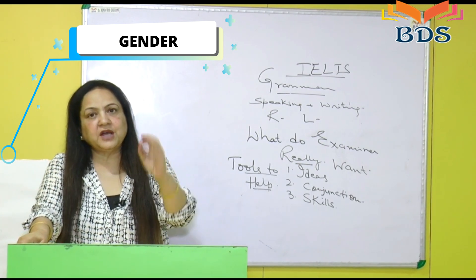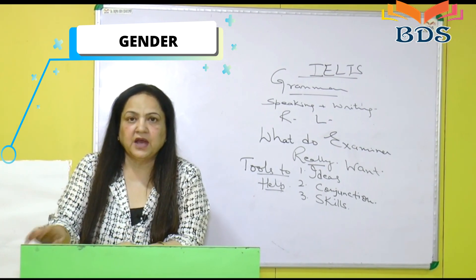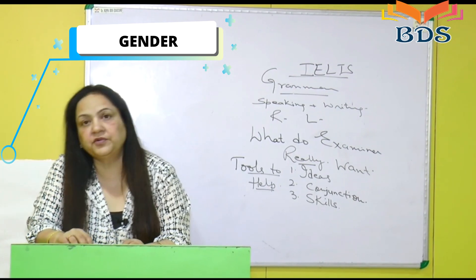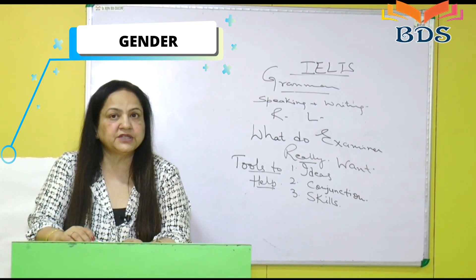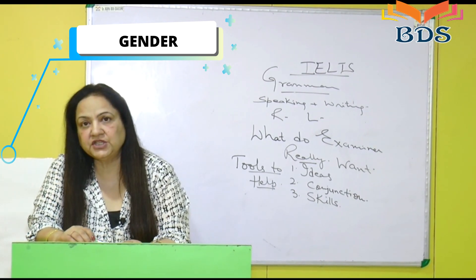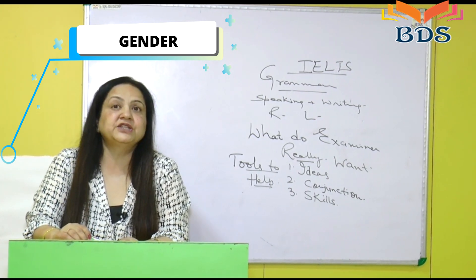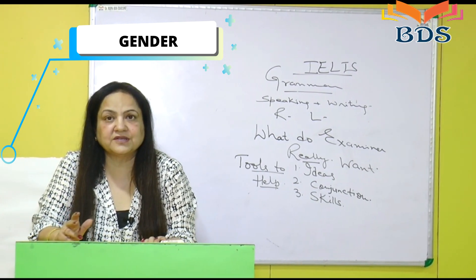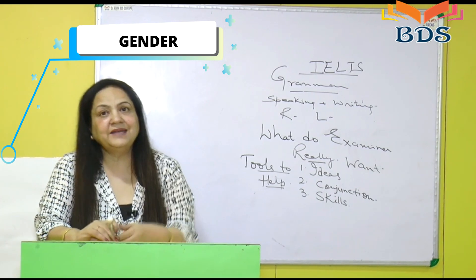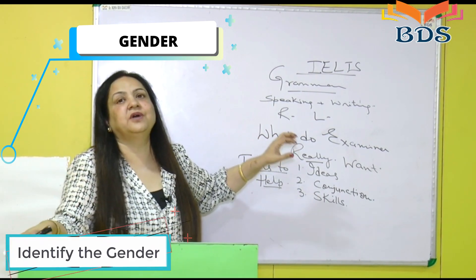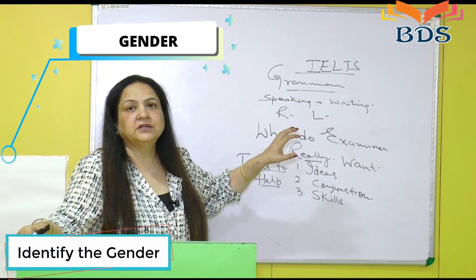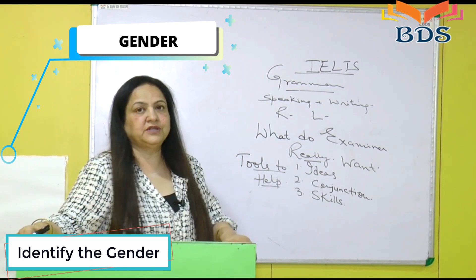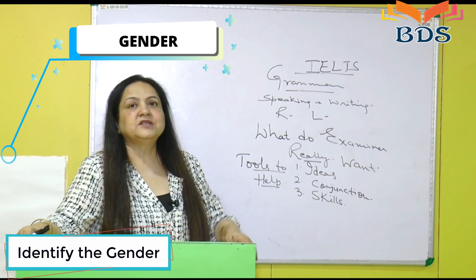Suppose they ask you, 'Who is your favorite teacher?' and you start the card saying, 'Professor Mahindar Singh is my favorite teacher, he's very intelligent, he's very helpful, and she's very disciplined' — it will make no sense. Identify the gender when you are making a cue card. Now I'll give you a very easy tip.